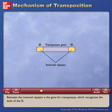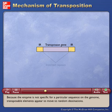Between the inverted repeats is the gene for transposase, which recognizes the ends of the IS. Because the enzyme is not specific for a particular sequence on the genome, transposable elements appear to move to random destinations.